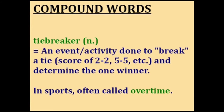Tiebreaker. When two teams are playing and the score ends equal — like 2 to 2 or 5 to 5 — this is called a tie. But in many games and contests we need one winner, so an extra activity called a tiebreaker is done to break the tie and determine the champion. In sports like soccer and basketball, this is often called overtime.